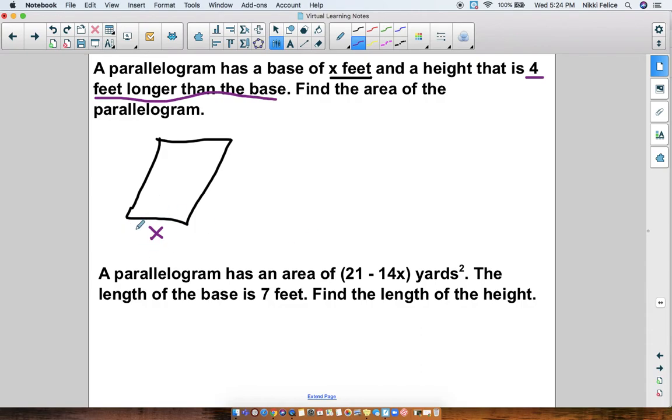The height is 4 feet longer than the base. Well, if the base is x and the height is 4 feet longer than that, how do I figure out what the height is? I add x plus 4 longer. If it's 4 feet longer, that's an additional 4 feet. So my height would be x plus 4 feet. So now that I have that all labeled, to find the area, I do base times height.